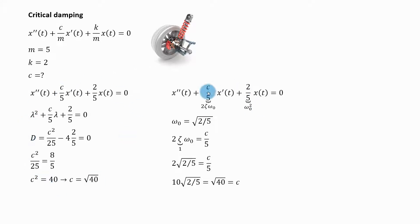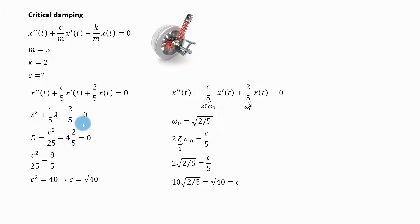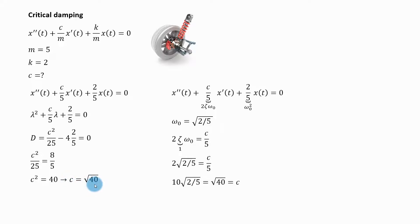Here I have two ways to approach this problem. The first approach uses the roots of the characteristic equation. I have the differential equation with mass and stiffness substituted. The characteristic equation has this discriminant. If I want my system to be critically damped, I need the discriminant to equal zero. Setting it to zero and solving, I get that the coefficient of resistance c must be square root of 40. That is the amount of damping needed to get a critically damped response. The second approach uses the damping ratio: I denote the terms as natural frequency squared and two times the damping ratio times the natural frequency, finding omega naught is square root of 2/5 and two zeta omega naught equals c over 5. Setting zeta equal to one and solving again gives c equals square root of 40.